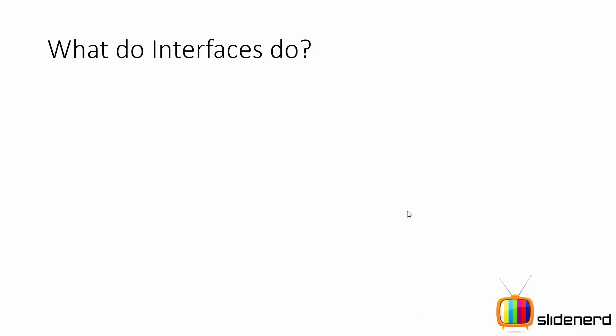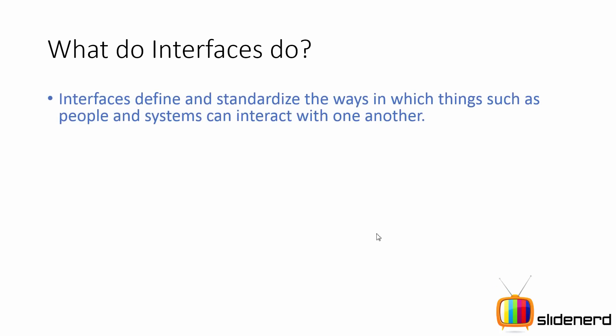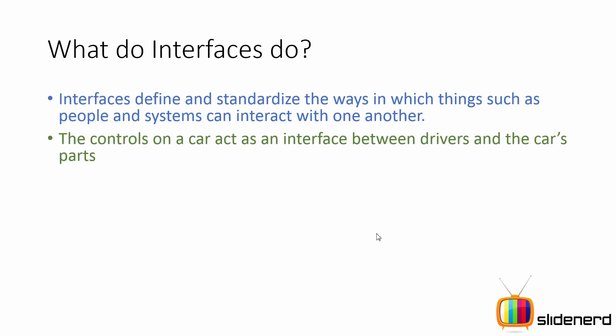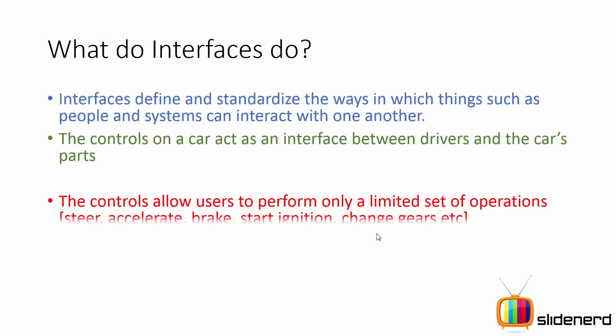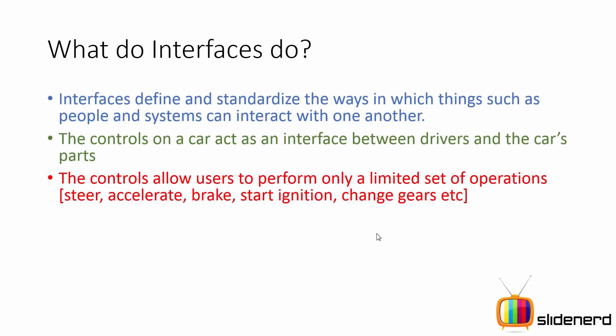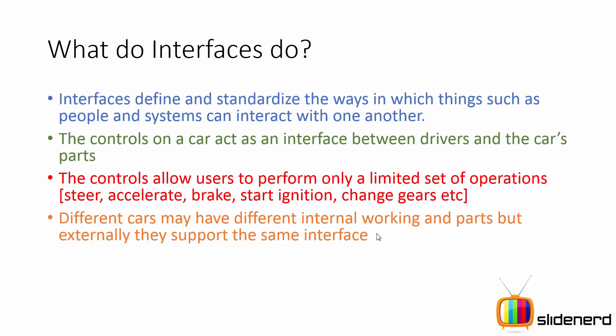Interfaces define and standardize the ways in which things such as people or systems can interact with one another. For example, the controls on your car — like your steering wheel, gearbox, ignition keys — act as an interface between the driver and the parts inside the car. They allow you to perform only a limited set of operations: you use the steering wheel to turn, the accelerator, brake, or clutch to change speed, and the keys to start the ignition.